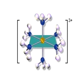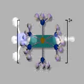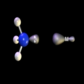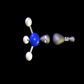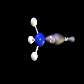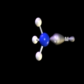Ammonia also acts as a Lewis base toward metal ions, as in this example of the cobalt-3-hexamine complex. The ammonia electron pairs are donated into vacant metal orbitals.